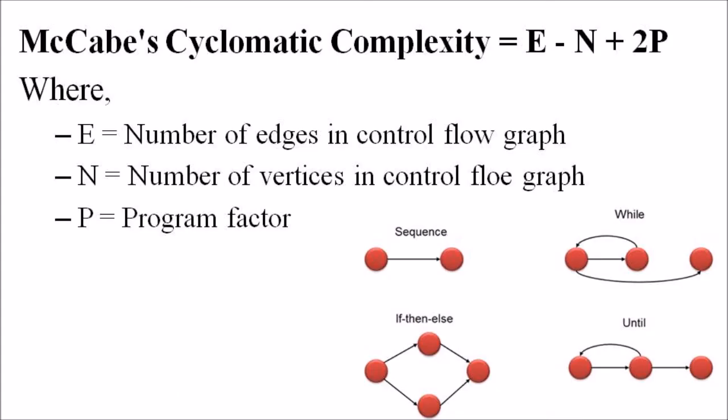In the cyclomatic complexity calculation step, after generating the control flow graph, calculate the cyclomatic complexity using McCabe's formula. McCabe's cyclomatic complexity is calculated using E minus N plus 2P, where E is the number of edges in the control flow graph,